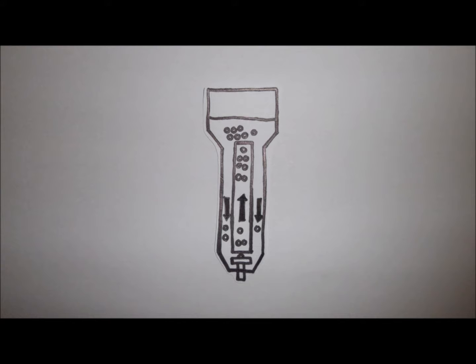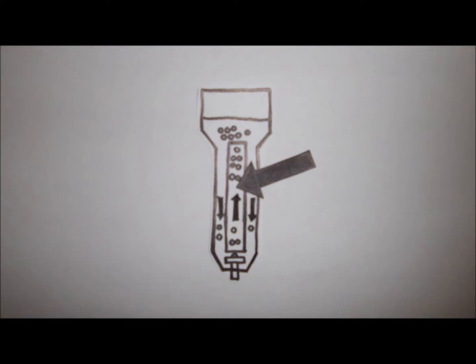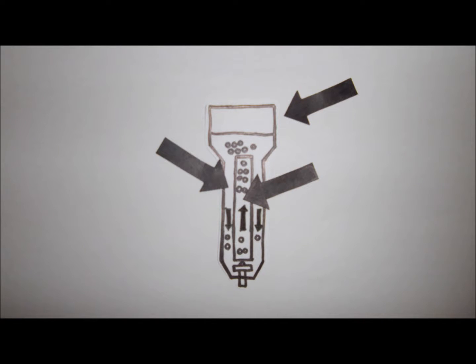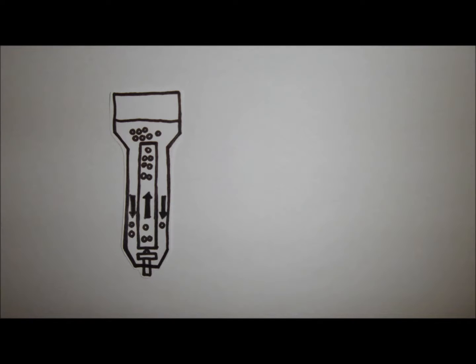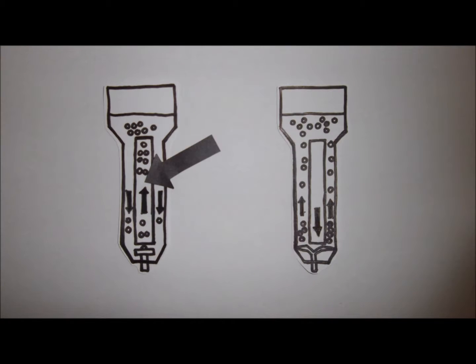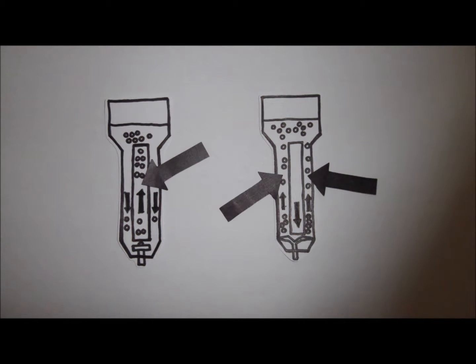An airlift bioreactor is sectioned into three parts: the air riser, the downcomer, and the disengagement zone. The air riser is the area where air bubbles rise in a vertical fashion. It may be on the inside or the outside of the draft tube.